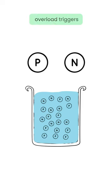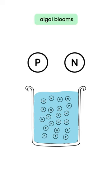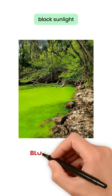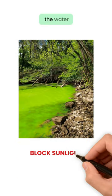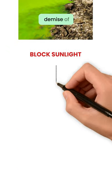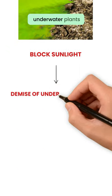This nutrient overload triggers the excessive growth of algal blooms and bacteria. These dense algae layers block sunlight from penetrating the water, leading to the gradual demise of underwater plants.